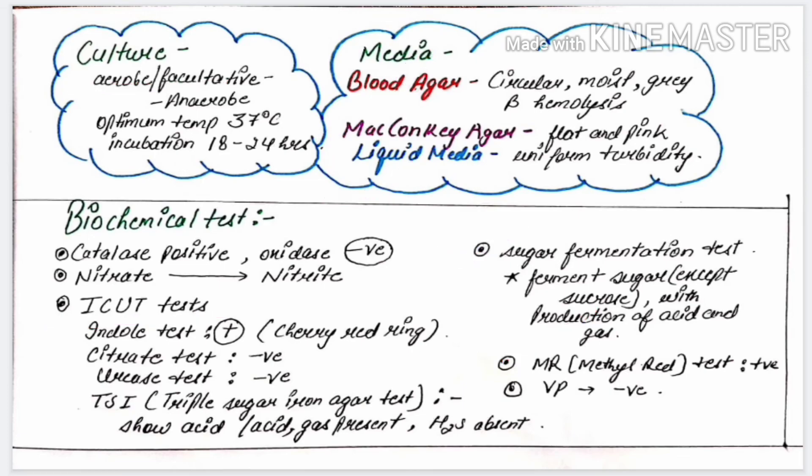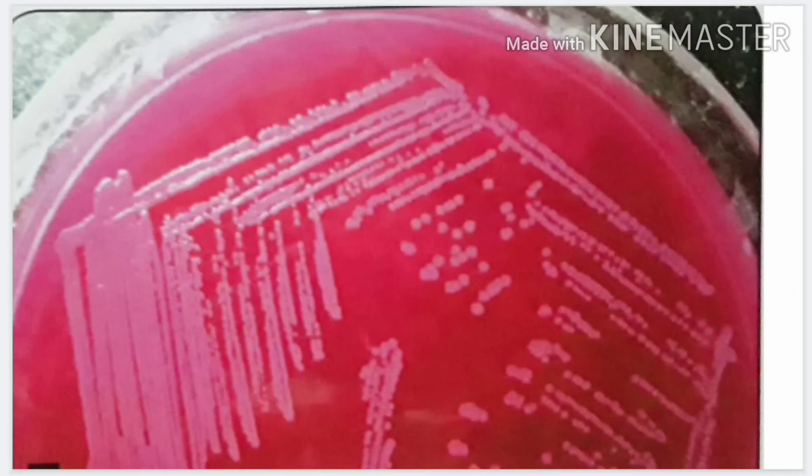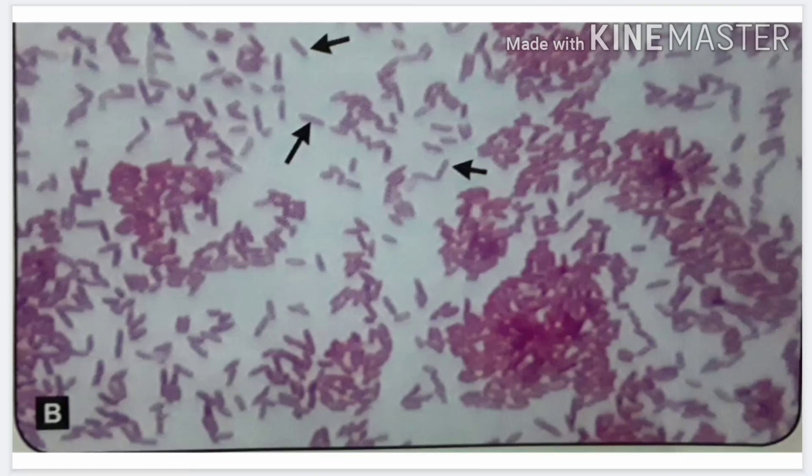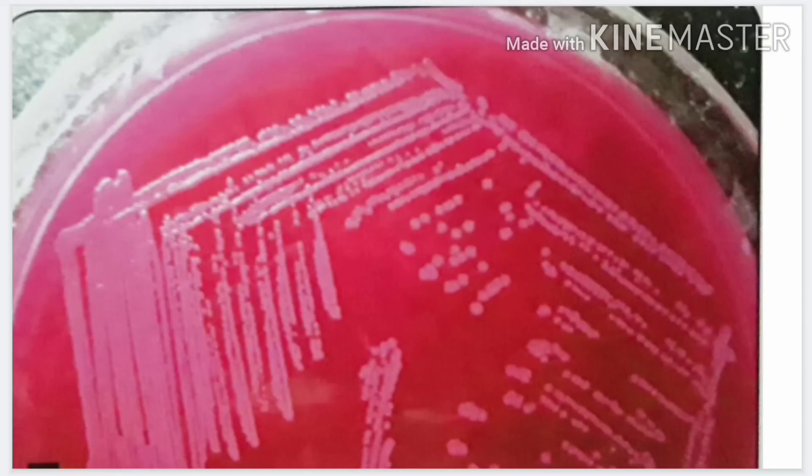Here some of the diagrams are given. You can see the diagram. Here you can see the gram-negative bacilli. The arrows are showing gram-negative bacilli. And here you can see the flat pink lactose fermenting colonies.